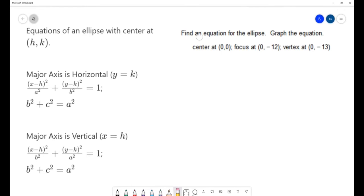In this example we want to find the equation for the ellipse and graph the equation with center at (0, 0), a focus at (0, -12), and a vertex at (0, -13).